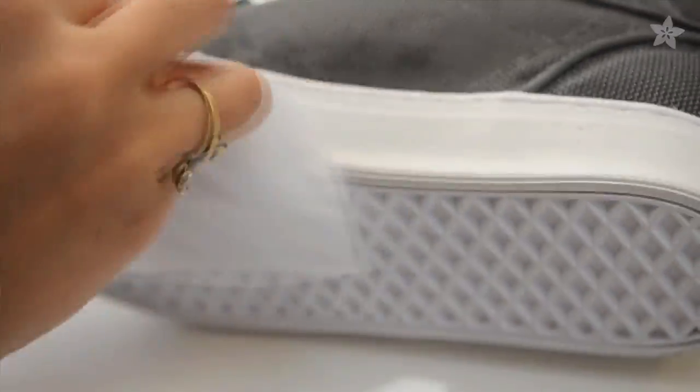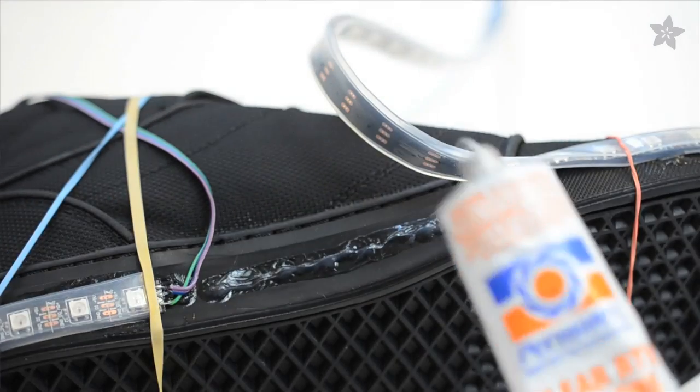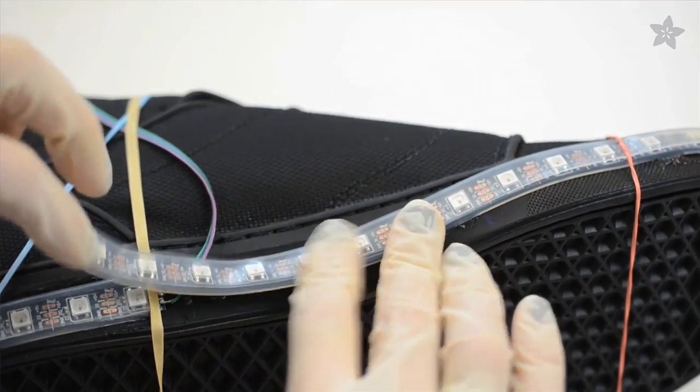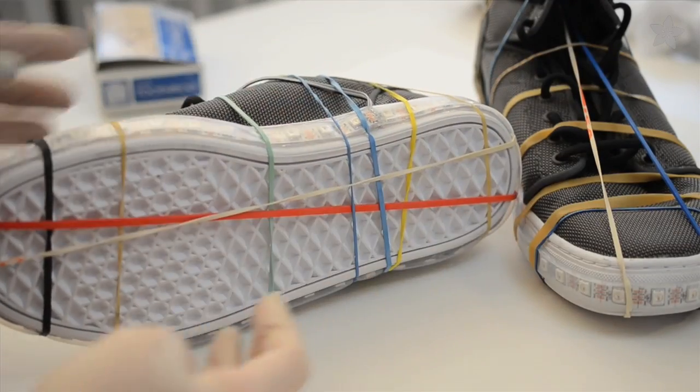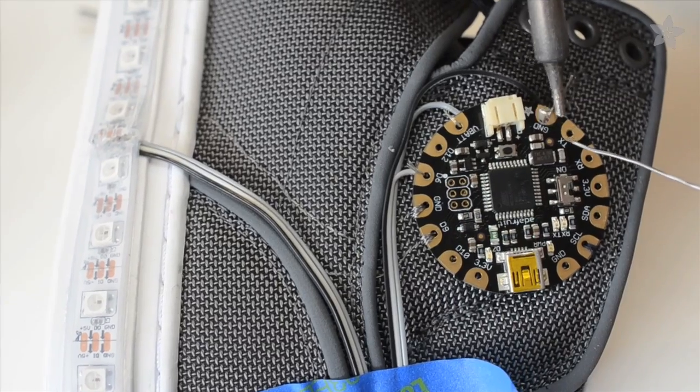Now we need to glue the strips to the shoes. We recommend Permatech 66B Silicone Adhesive because it definitely sticks to the sheathing of the NeoPixel strip, but be sure to test any adhesive first to make sure it also sticks to the rubber of your shoes.